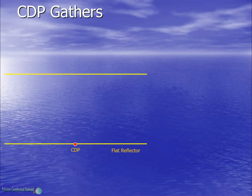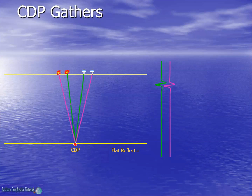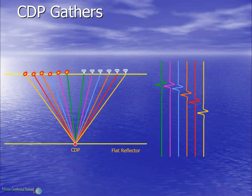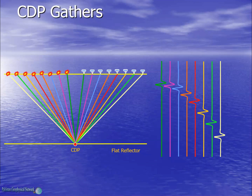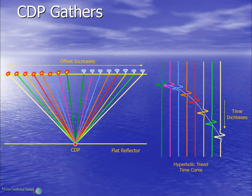Now let's consider CDP gathers from a common depth point. The reflected ray path and its seismic event are shown. As the source-receiver offset increases, the travel time along the ray path also increases. Thus the events from the same depth point are delayed due to the increasing source-receiver offset, and in this way we have a hyperbolic travel time curve.